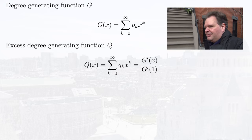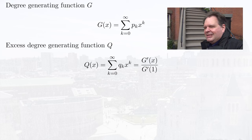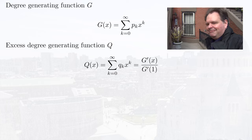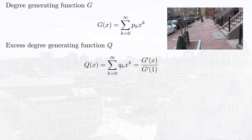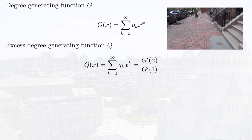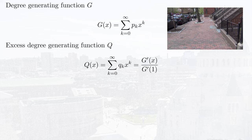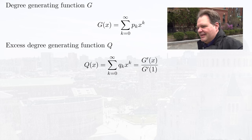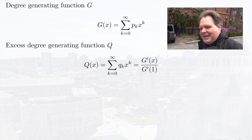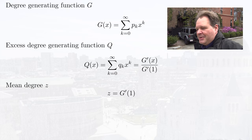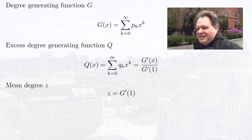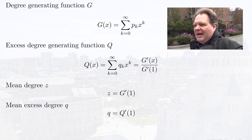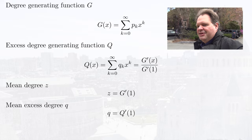From this degree generating function, we can also compute the excess degree generating function Q. We can compute Q as G'(x) divided by G'(1). From these generating functions, we can compute the mean degree and the mean excess degree by computing the expectation value. To compute the expectation value from a generating function, you just differentiate it and then put in 1. So our mean degree Z is G'(1) and our mean excess degree is Q'(1).